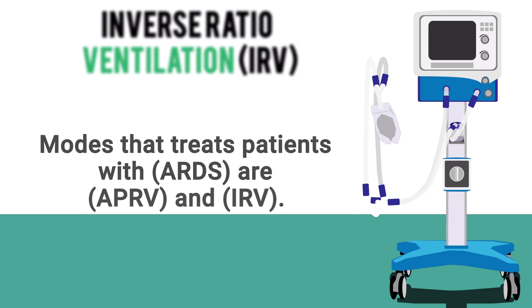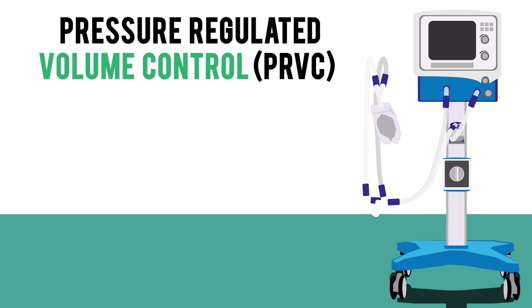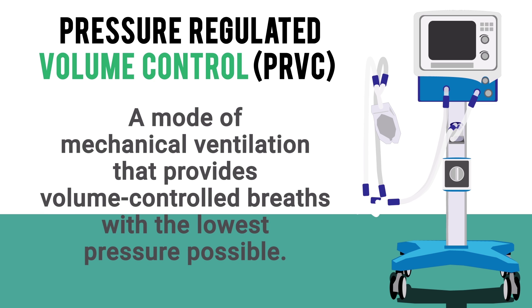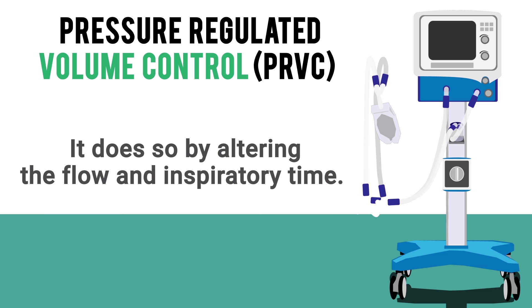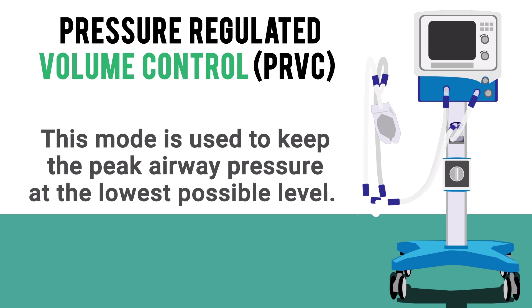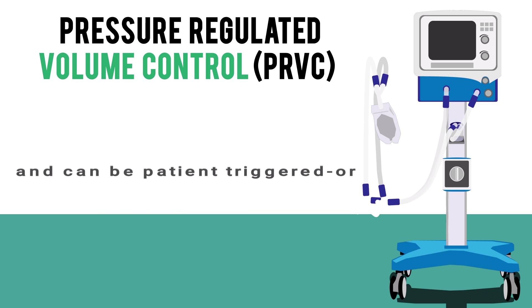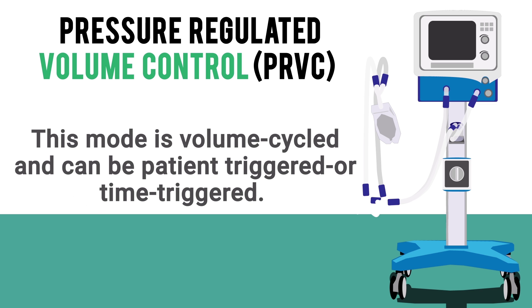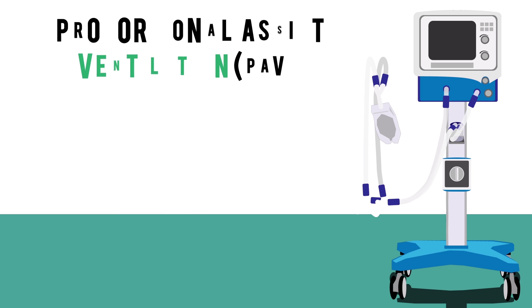Next up we have pressure regulated volume control, or PRVC. This is a mode of ventilation that provides volume-controlled breaths with the lowest pressure possible. It does so by altering the flow and inspiratory time. This mode is used to keep the peak airway pressure at the lowest possible level. It is volume-cycled and can be patient-triggered or time-triggered.